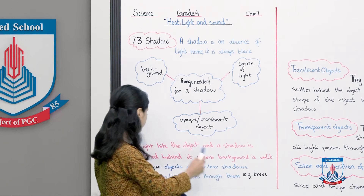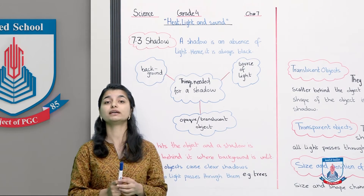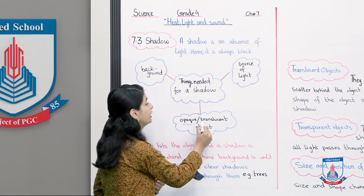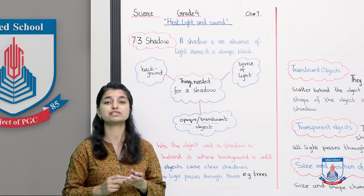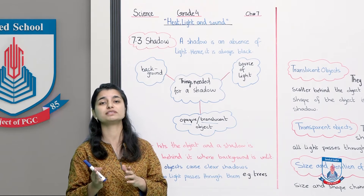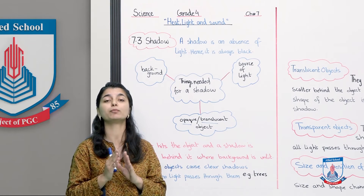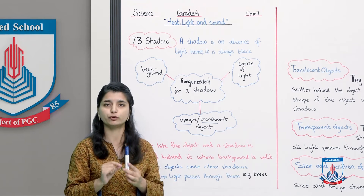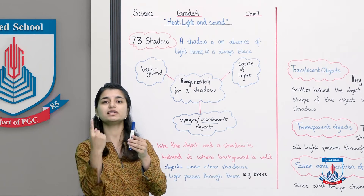Opaque objects cause clear shadows because no light passes through them — for example, trees. Opaque objects are firm, dark, and solid; light cannot pass through them. Because no light passes through, they create a proper, clear shadow. All the light scatters from the sides of the object, producing a well-defined shadow behind it.